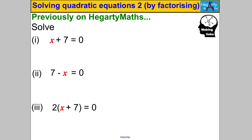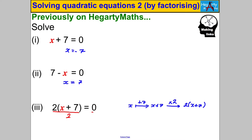For the first two cases you can just spot X: X + 7 = 0 means X must be negative 7, since negative 7 plus positive 7 equals 0. For the third case, 2(X + 7) = 0, divide both sides by 2 to get X + 7 = 0, and therefore X must equal negative 7. You can do that division in your head and you get the same answer.